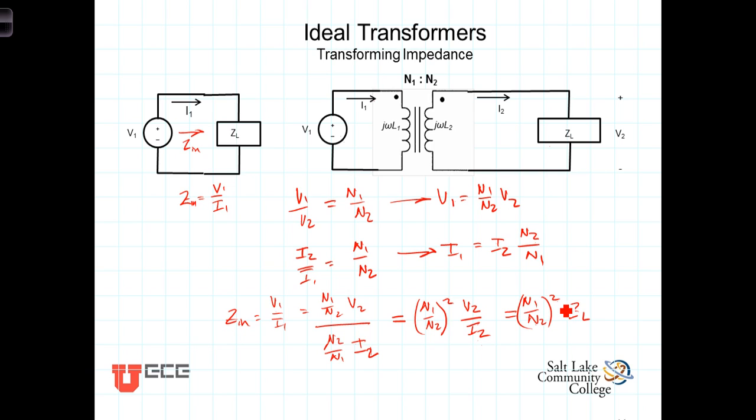Thus, the input impedance seen by the source is going to be greater, both because the voltage here across the primary is going to be greater, and the input impedance is going to be greater because the input current is going to be less than it is at the secondary, and that increased voltage and decreased current is both related to this N1 over N2, so the effect of the turns ratio is squared.